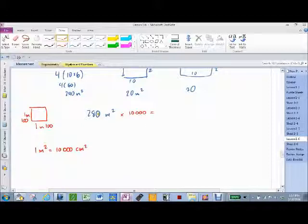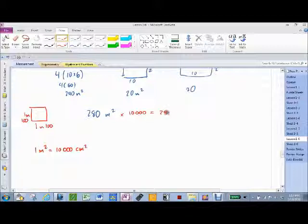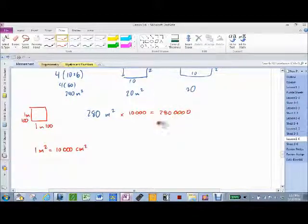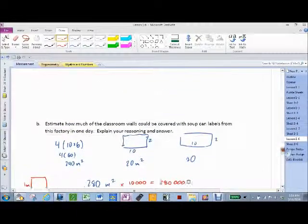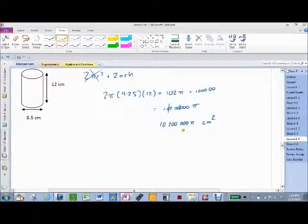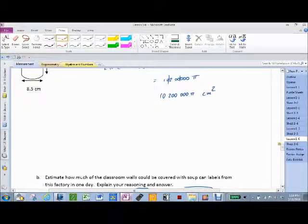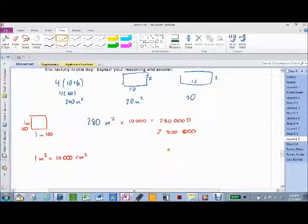So, how many zeros are getting added on to 280? Four. Four zeros. So, 280 and four zeros. Which is 2,800,000 square centimeters. Now, all I've got to do is I know I've got this many square centimeters. It's going to be 30 million. I only need 2.8 million. So, how many times can I cover the walls?